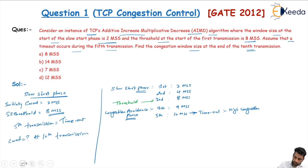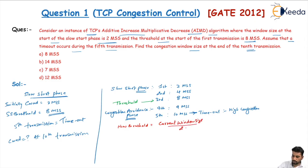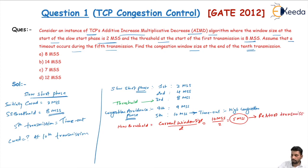We will start with a new threshold. New threshold is equal to current window size divided by 2. Current window size is 10 MSS, so the new threshold is 10 / 2 = 5 MSS. We will restart transmission in the slow start phase.